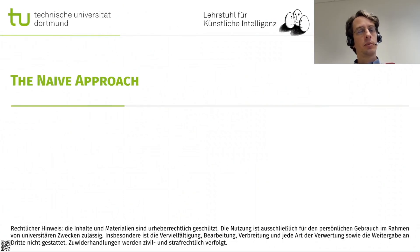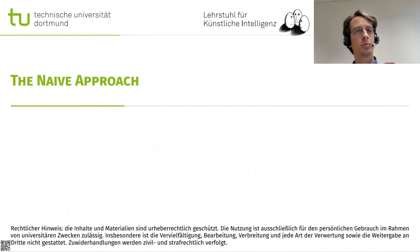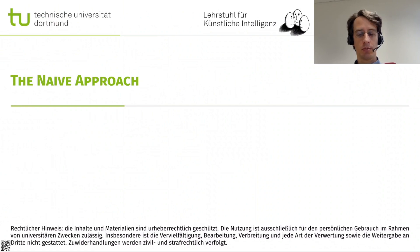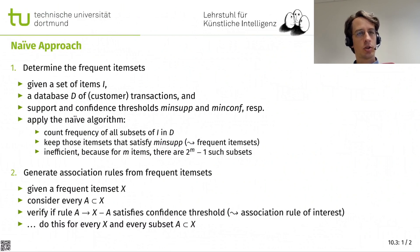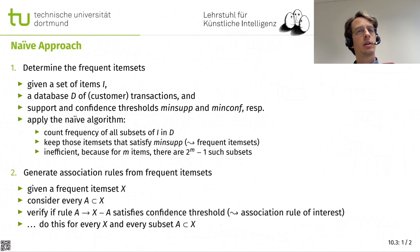We will first look at the naive approach to find frequent itemsets. This is not a practical approach — it does not make sense to use because it's just too expensive. The naive approach would be: given a set of items I and a database D of transactions, and our thresholds minimum support and minimum confidence, we can just try all subsets of I in D.